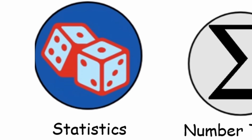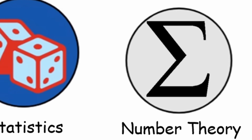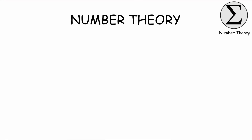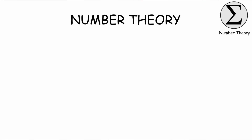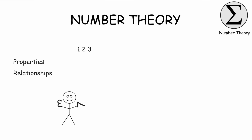Number theory is a branch of mathematics that explores the properties and relationships of whole numbers like one, two, and three. It involves studying patterns and properties of numbers to understand their behavior. Number theory is often like solving puzzles with whole numbers.